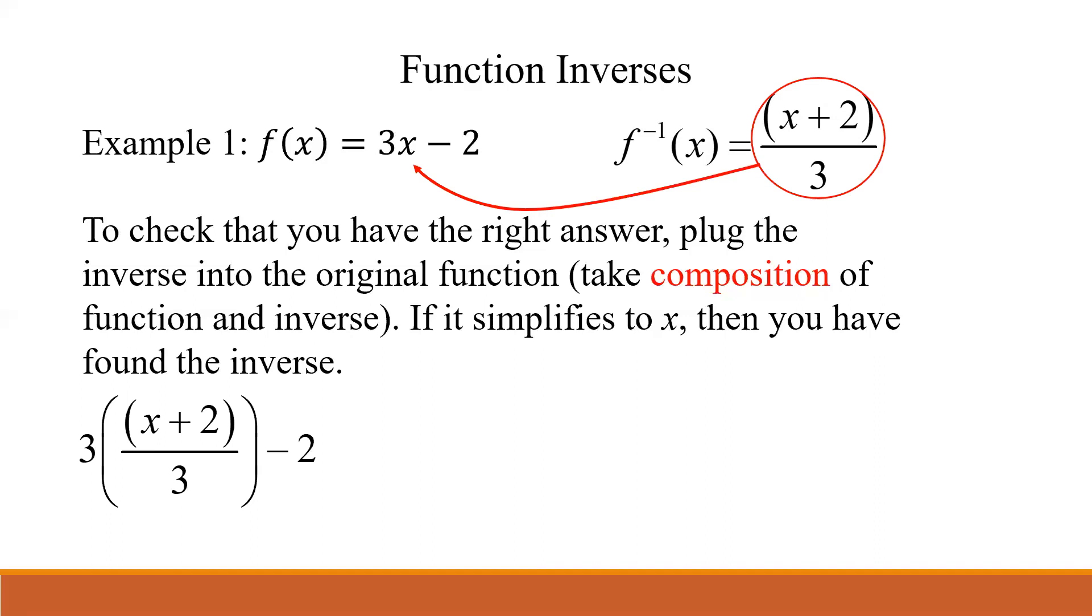Once we do that, if it simplifies down to just x, then you indeed did find the inverse. So we're going to take that whole (x + 2)/3, and plug it in to x in the original function. So it'd be 3 times big parentheses our inverse, and then that minus 2 is still on the end. Then just simplify it. Look what happens. We have those two 3s and they cancel out. That leaves us just with x + 2 - 2, and lo and behold, that is x. So as soon as that happens, then we know that we have found the inverse.